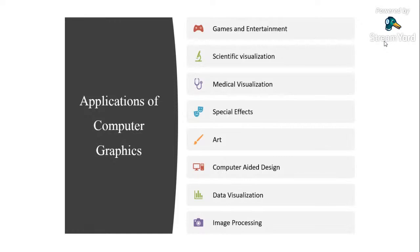The first application is games and entertainment. We are watching cartoon movies with special effects — that is an entertainment application. As an example, the movie Tangled: all the characters, scenes, backgrounds, and sequences are created and manipulated by computer. The only thing added by humans is voice. All other things like backgrounds, characters, and movements are generated with the help of computer.